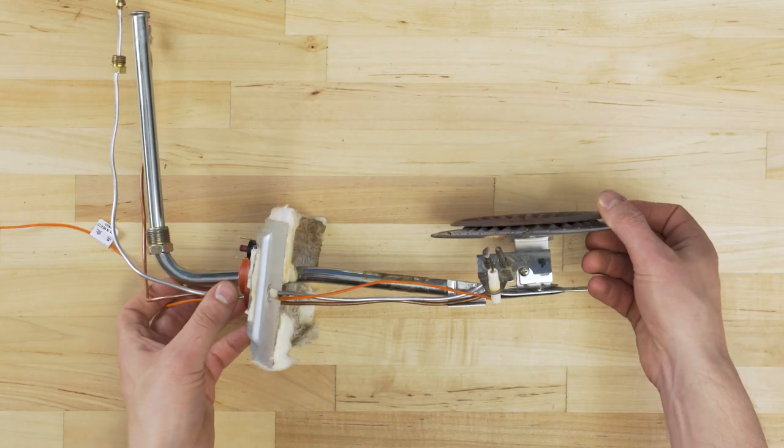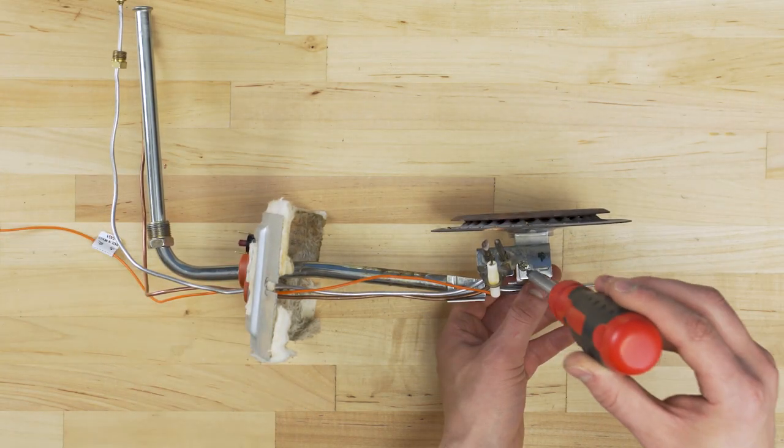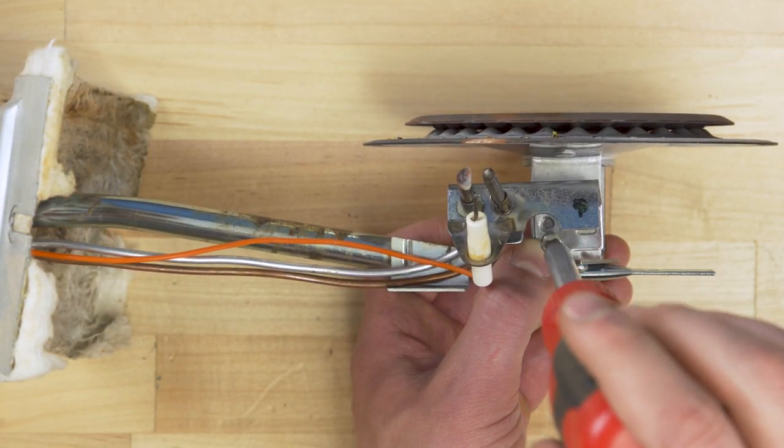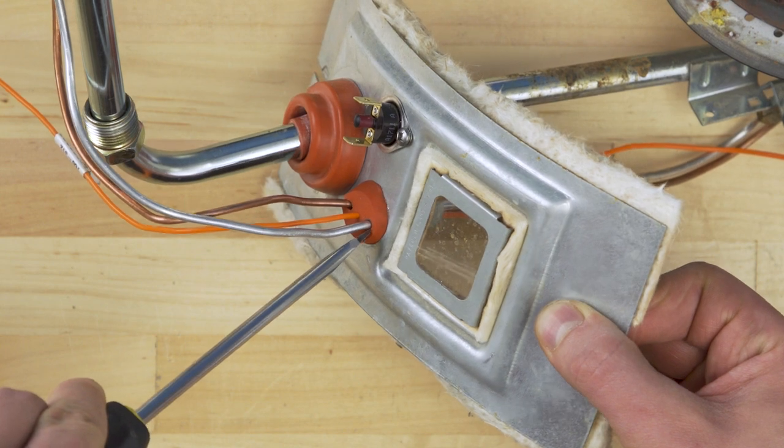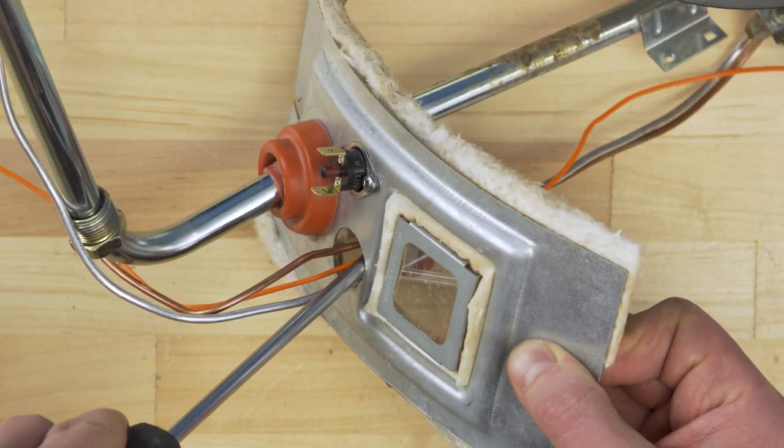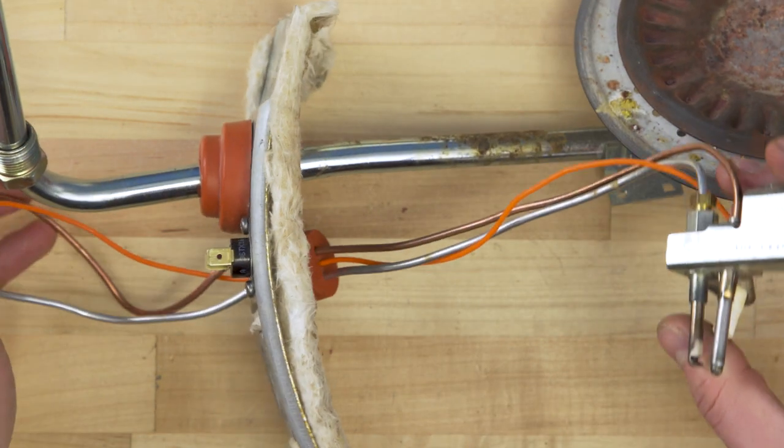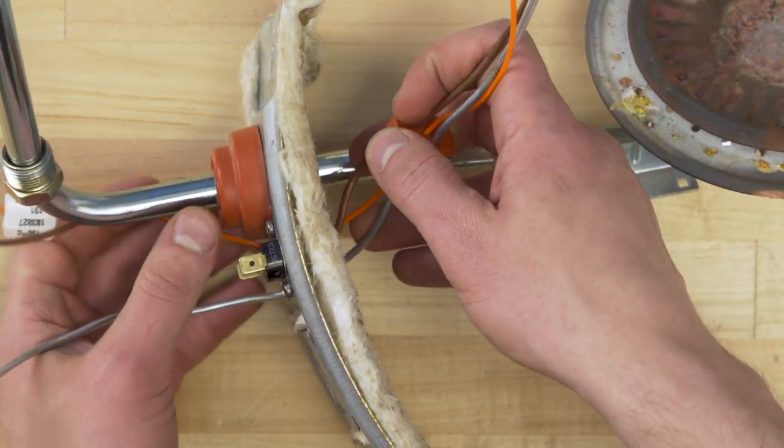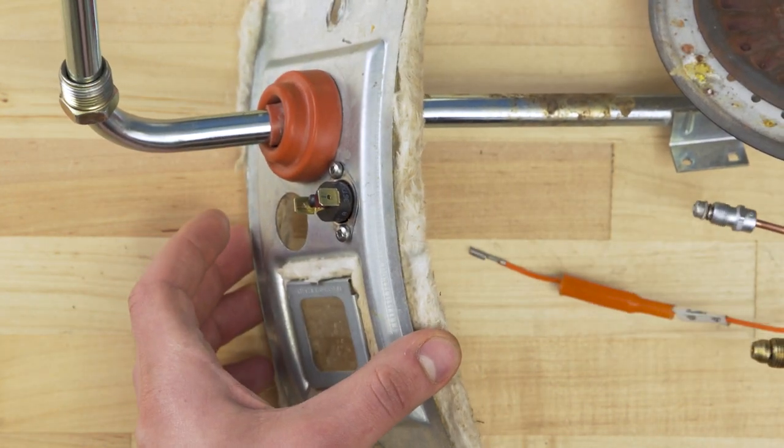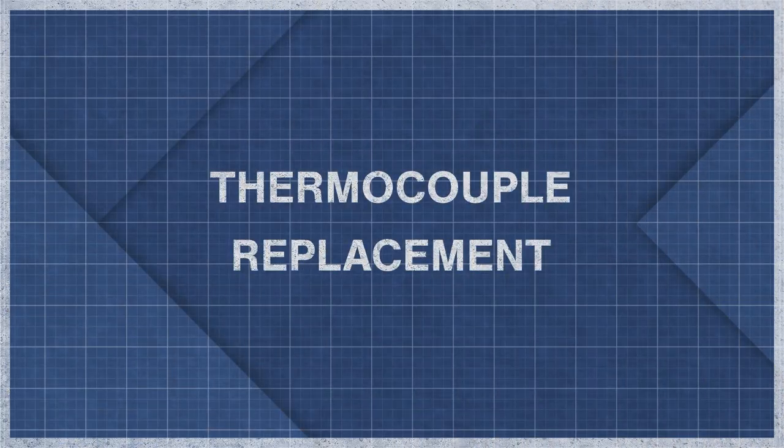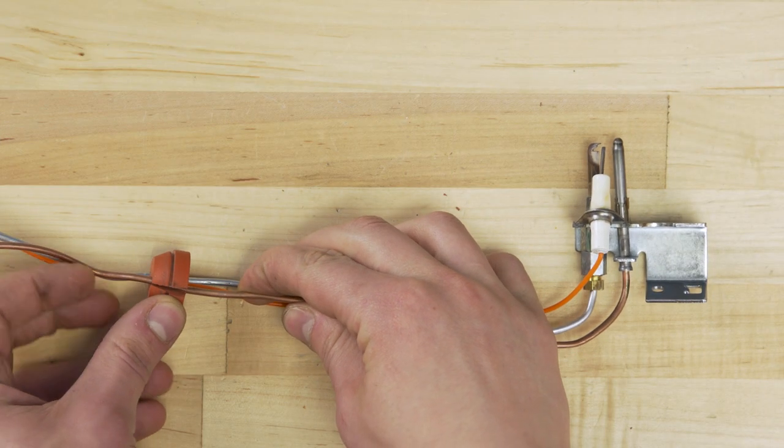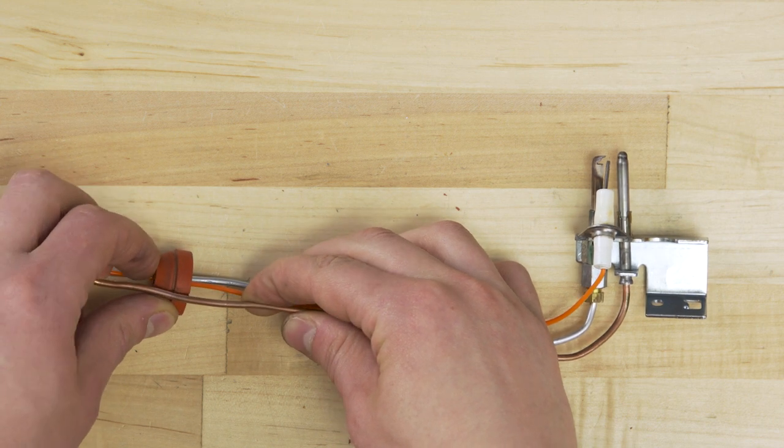In many cases you'll have to unscrew the pilot assembly. Now separate the plug that holds the wires in place. Next feed the pilot tube and wires through the manifold door.